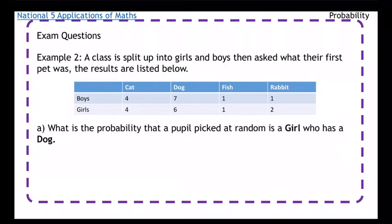Example number two: A class is split into girls and boys and then asked what their first pet was. The results are listed below. What is the probability that a pupil picked at random is a girl who has a dog? A pupil picked at random, which means that for our total we need to add up all the pupils. And this is a girl who picked a dog. Well, the girl picked a dog, dog and girl, there is that six.